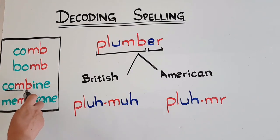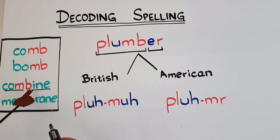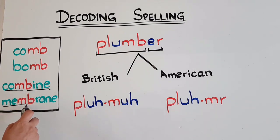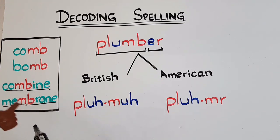The reason is this: when M and B are at the end of a syllable, we do not pronounce B. But when M and B are next to each other but in different syllables, we do pronounce B - like in 'combine,' where this is the first syllable and this is the other. Even in 'membrane,' M and B are in different syllables, that's why we pronounce B after M.